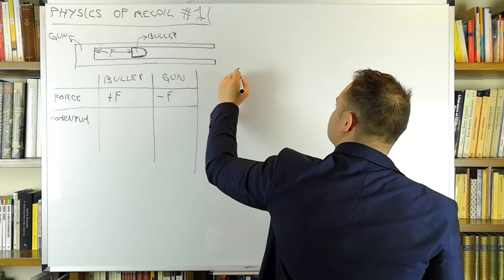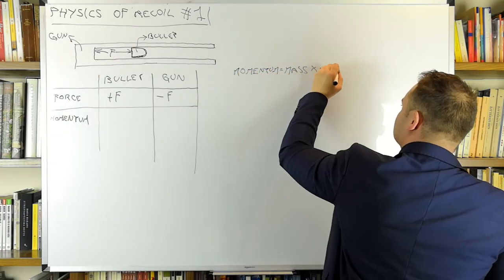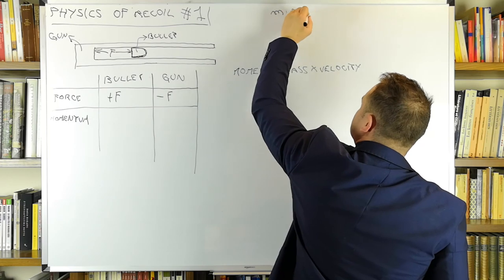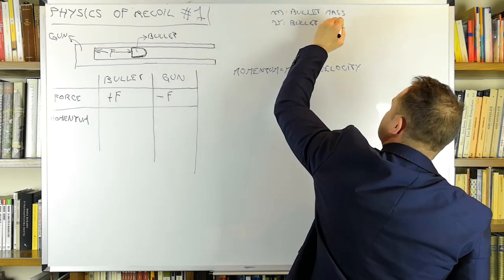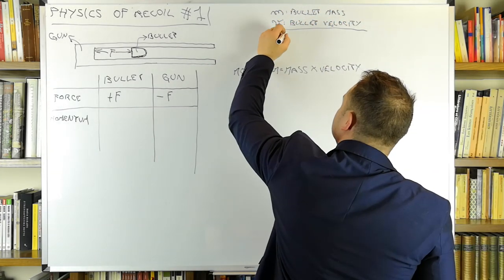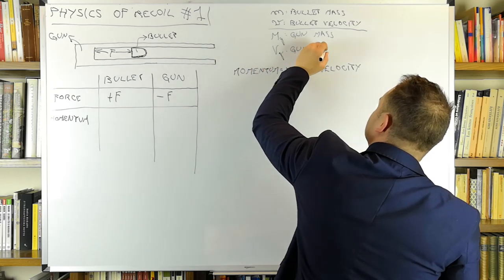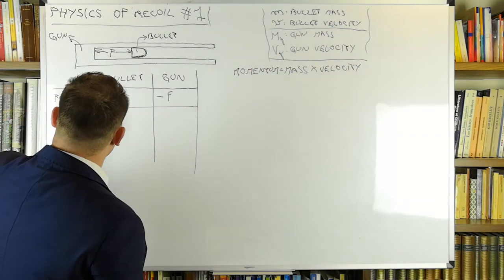Now, momentum is the quantity obtained by multiplying a body's mass by its velocity. These are the symbols I am going to use for the amounts we need. So the momentum of the bullet will be M times V, and the one given to the gun will be Mg times Vg.